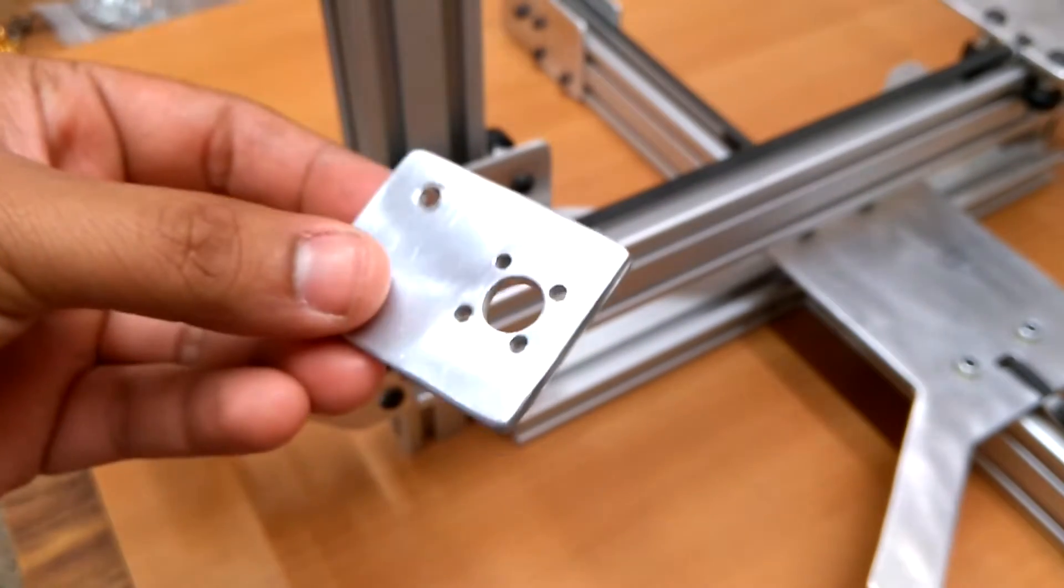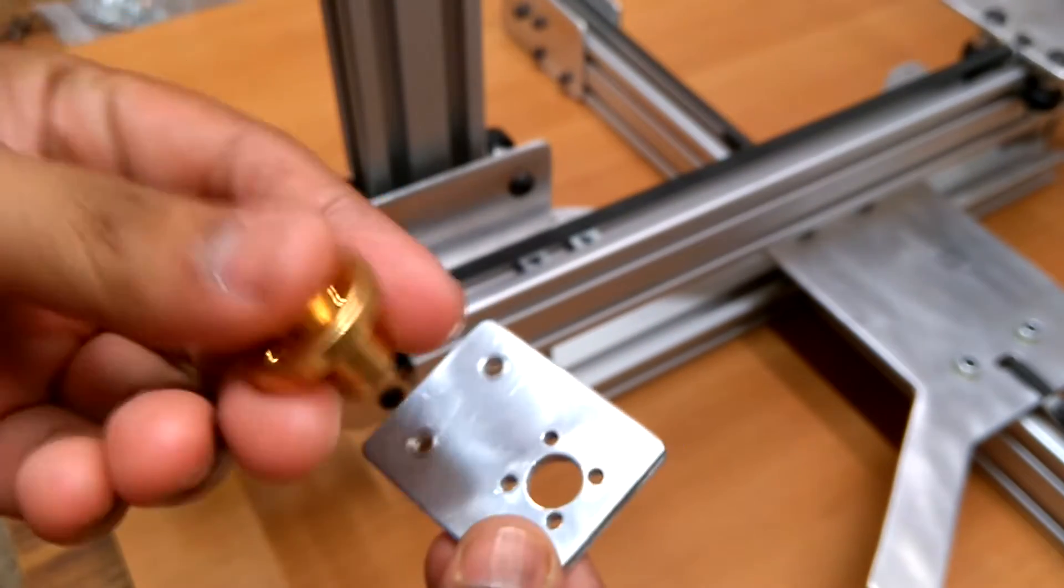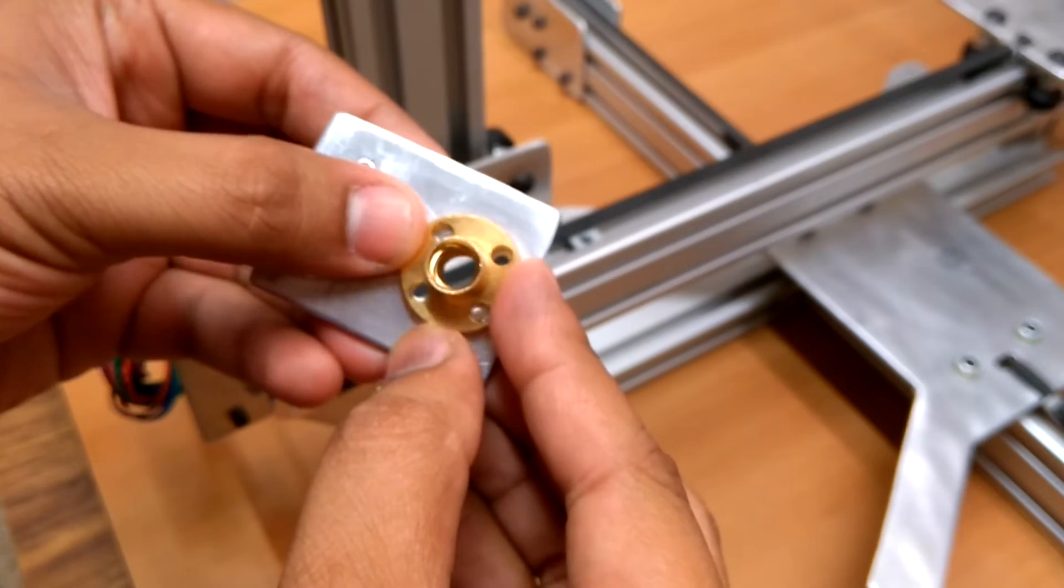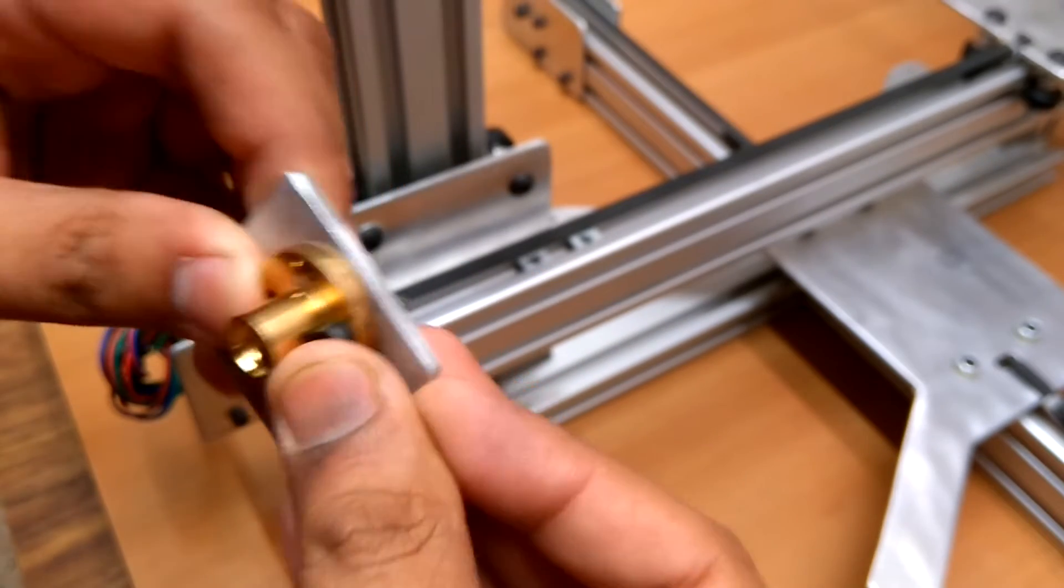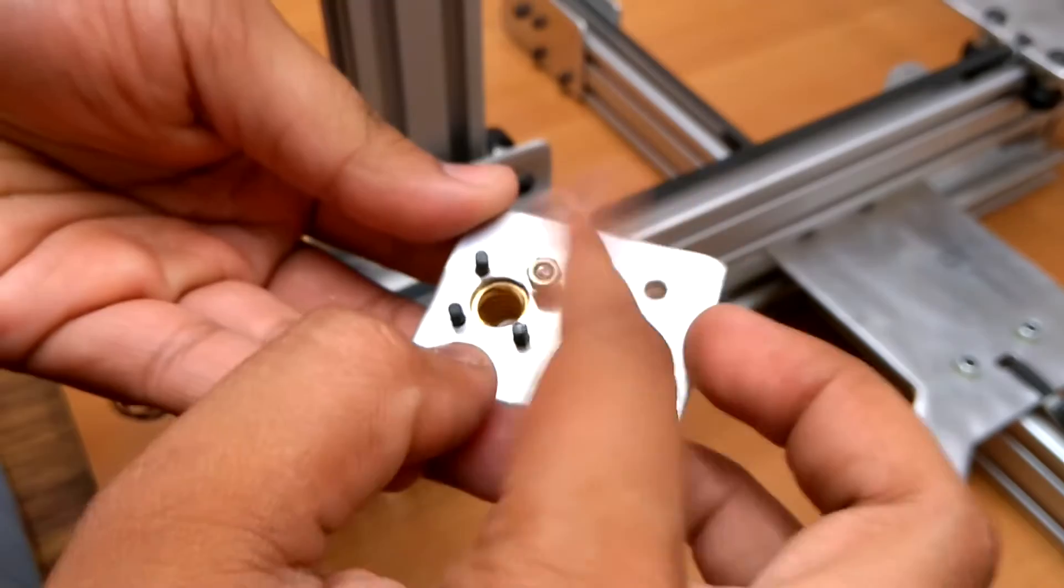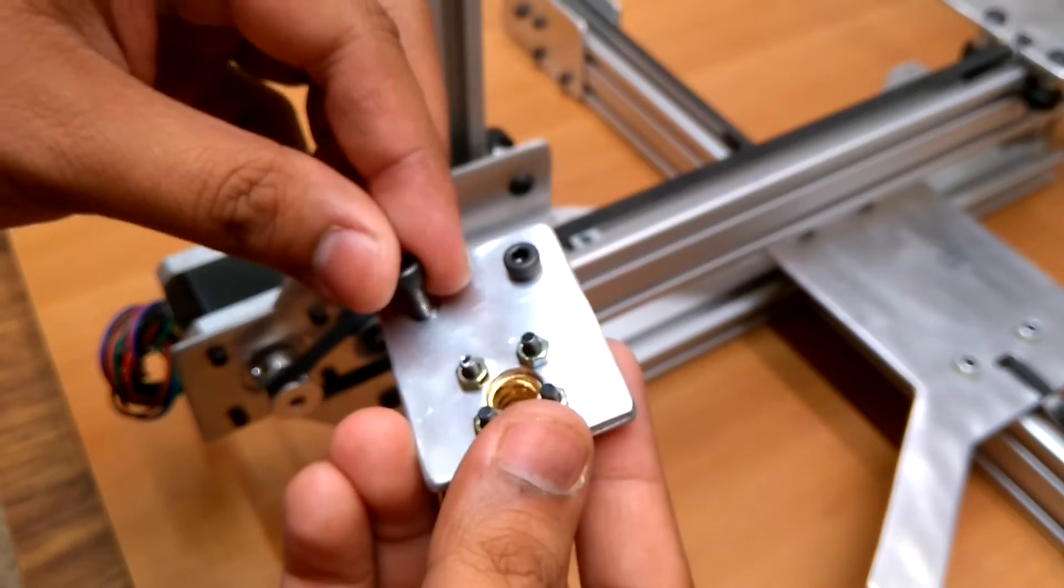The z-axis rod had a nut which sits on another mount plate on the x-axis aluminum extrusion. I attached the trapezoidal nut on the mount plate and fixed the plate on the x-axis again via sliding nuts.